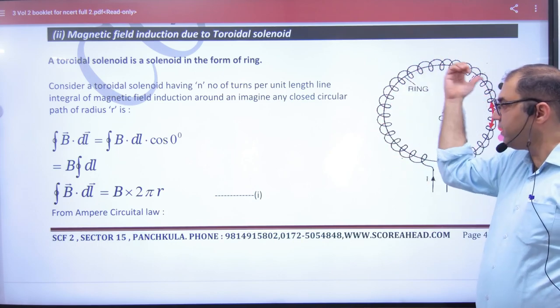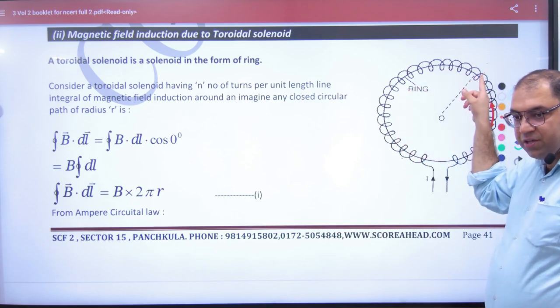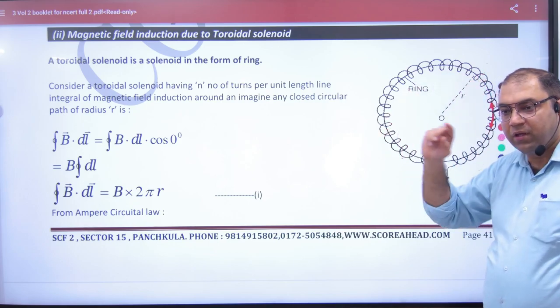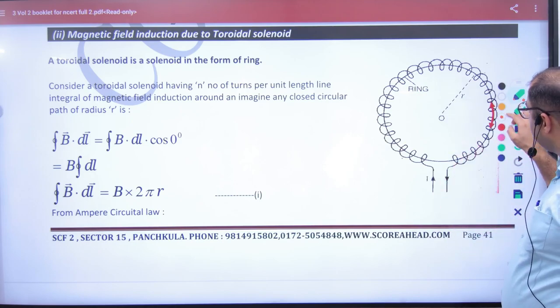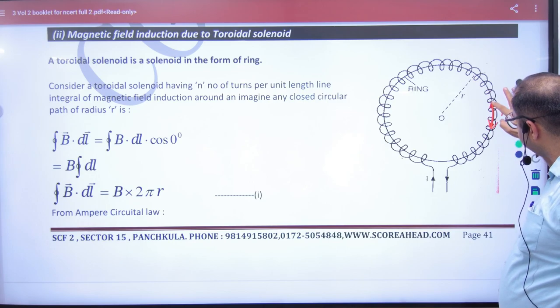If you want to take a closed path here, take a closed path and draw a circle. DL vector in one direction, like this.